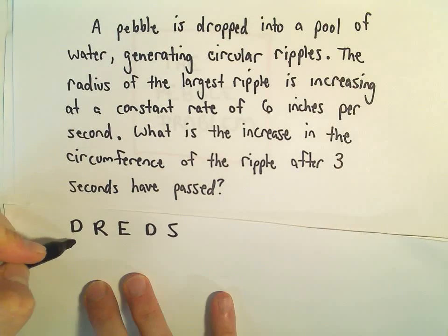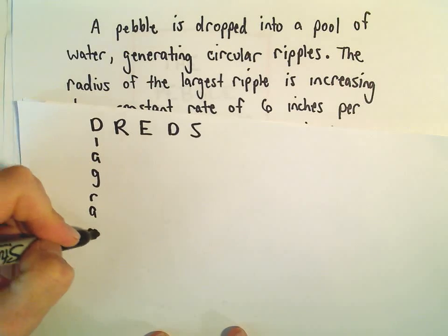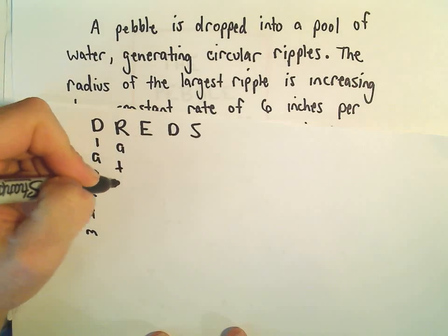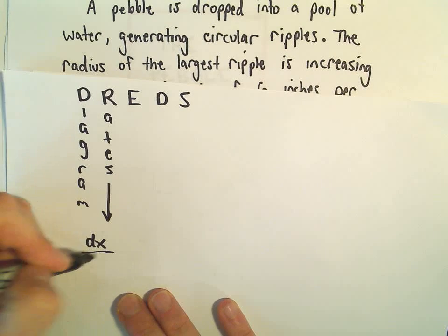And what this stands for is the D stands for draw diagram. The R stands for label rates. So when we label rates, we'll usually have stuff like dx/dt.